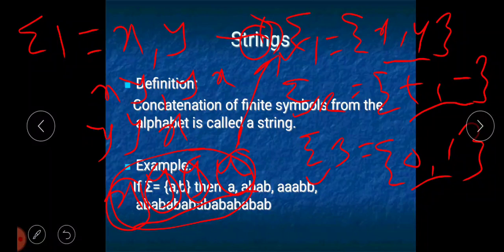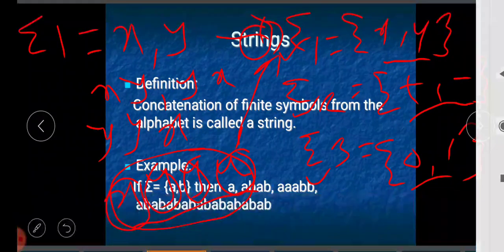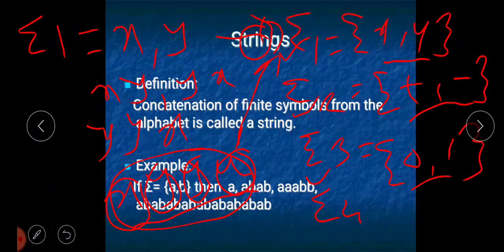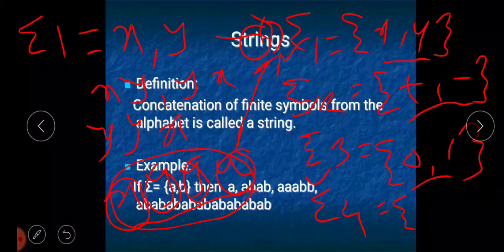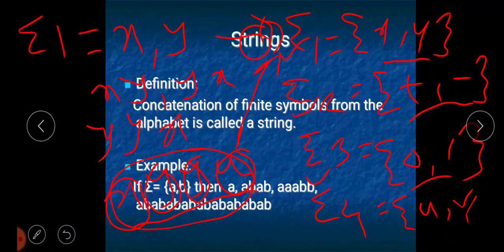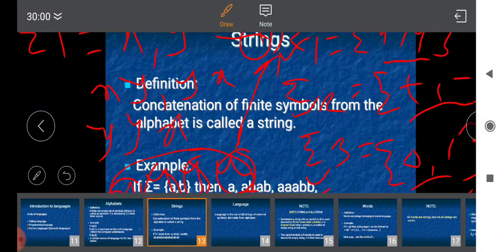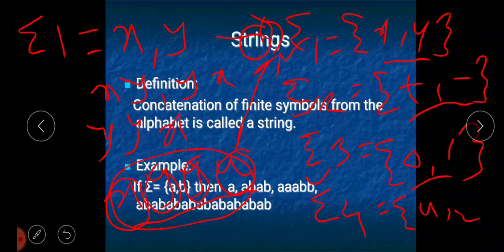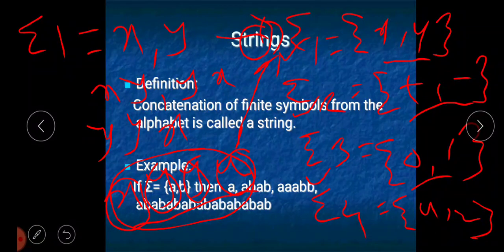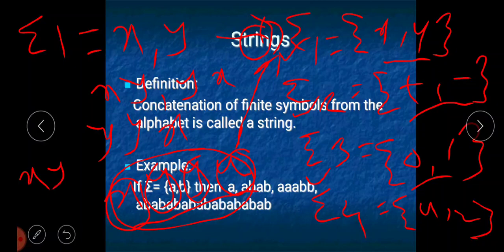For better understanding, let us take one more alphabet — alphabet4 — which contains {u, z}. So in total we have four alphabets: alpha1 has x and y, alpha2 has + and -, alpha3 has 0 and 1, and alpha4 has u and z.